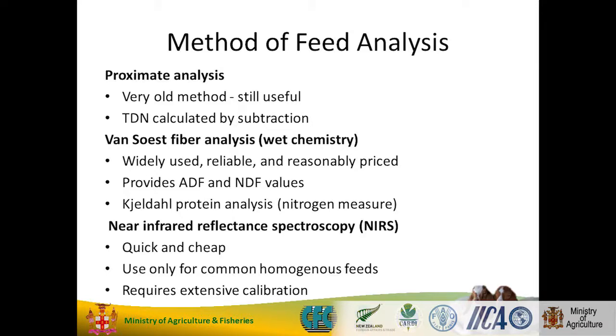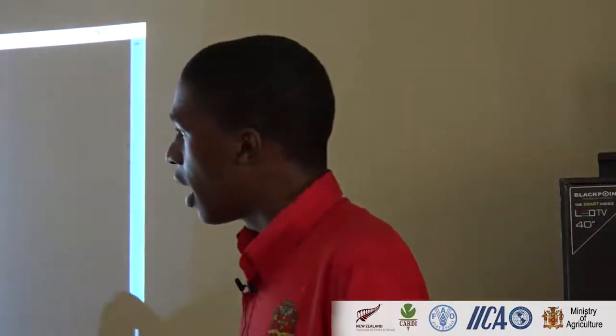You have crude protein, which is very important. You do NDF — neutral detergent fiber — it's a digestibility measure. And you have acid detergent fiber, though I really use neutral detergent fiber more. You can do crude fat, crude fiber, and what you call ash, which is your minerals. And your dry matter.